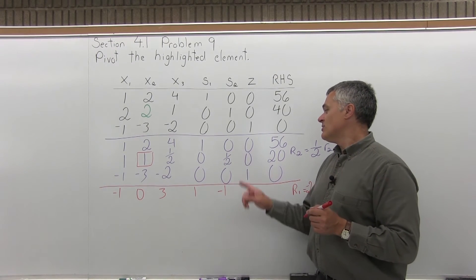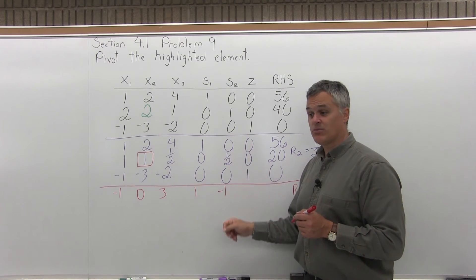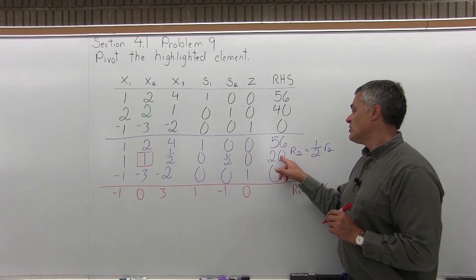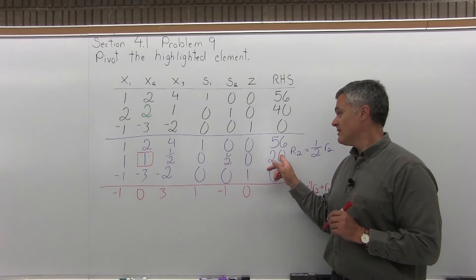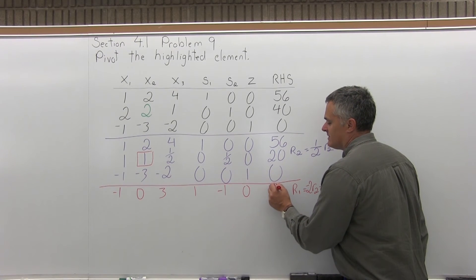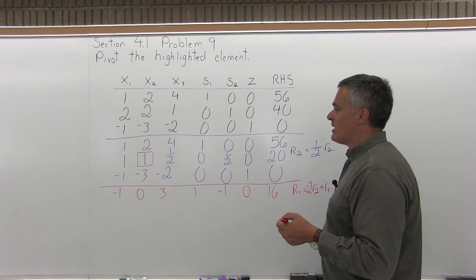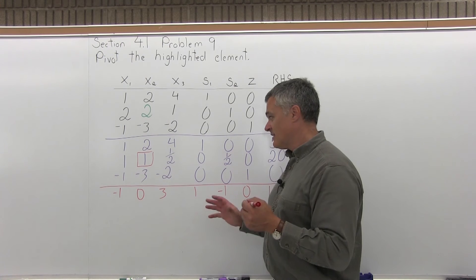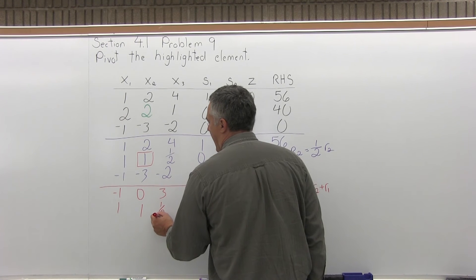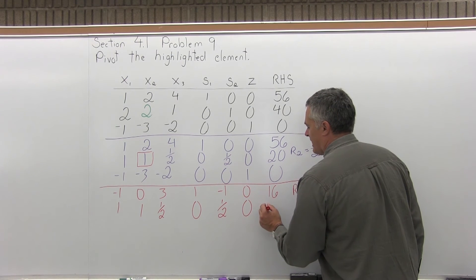In the last column: negative 2 times 20 is negative 40, plus 56 gives positive 16. The second row has the 1 that I'm using as a pivot, so I don't want to change anything. I'll leave that second row exactly as it is: 1, 1, 1/2, 0, 1/2, 0, and 20.